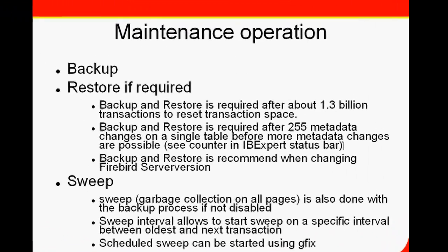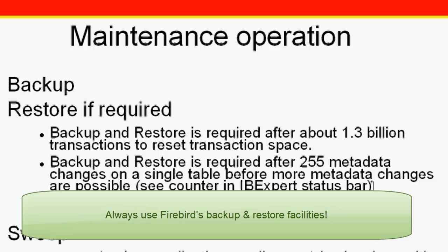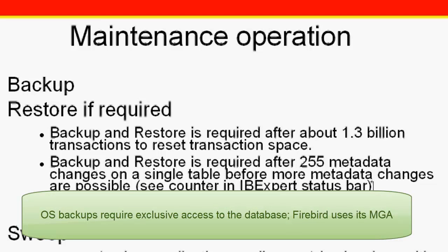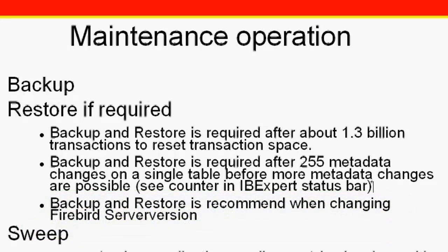But why is database backup and restore important? Performing regular backups protects from hardware failures and data corruption which cannot be fixed by the Firebird or Interbase maintenance tools. It is important to use the Firebird backup and restore facilities even though most networks include a facility for data backup and restore across the network, because operating system backups require exclusive access to the database. The Firebird backup runs parallel with concurrent database accesses by other users. Firebird uses its multi-generational architecture to take a snapshot of the database at a moment in time for the backup. All information generated by committed transactions and present at this moment is backed up, and all files in a multi-file database are backed up.